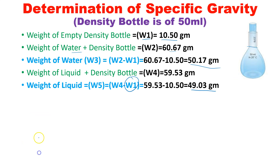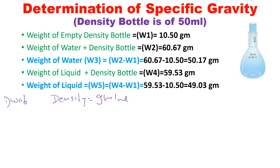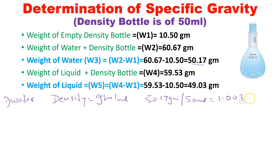Now for the density calculation. Density is in grams per mL. Water density equals mass of water divided by volume, which is 50.17 grams divided by 50 mL. Since the bottle is 50 mL, there is no need to measure the volume separately — just fill it completely. The density of water I get is 1.003 grams per mL.